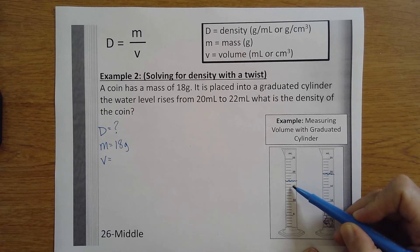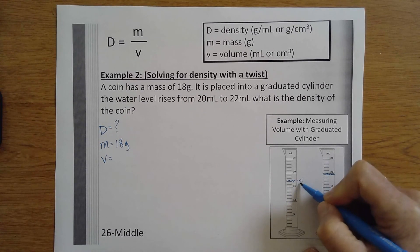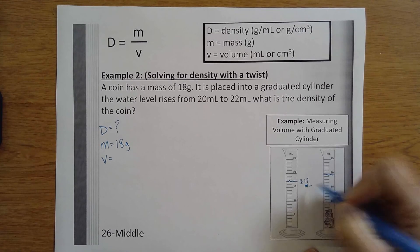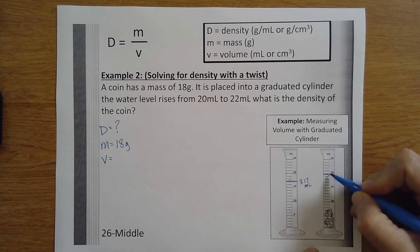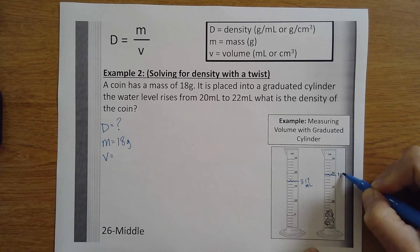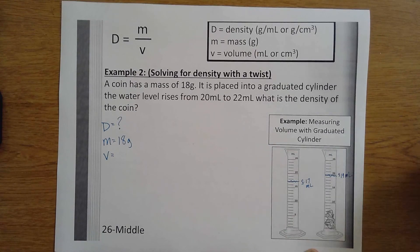And then they plunked whatever this shape is, the solid, in, and the water level rose to this area, which looks like about 19 mils. So this is the same thing that our problems did with the coin. Originally the graduated cylinder had 20 milliliters of water.